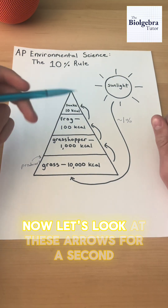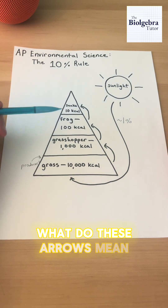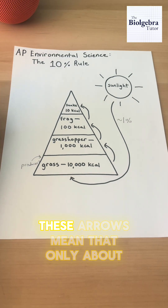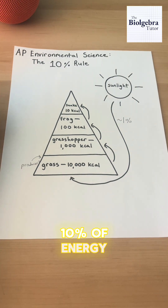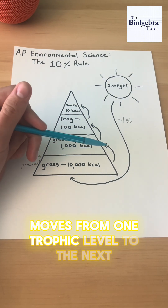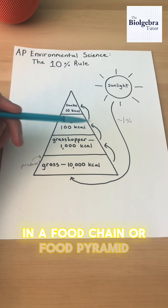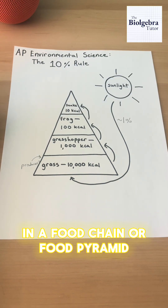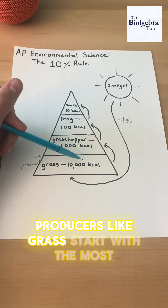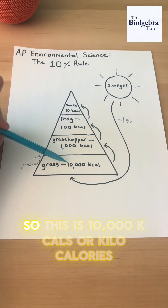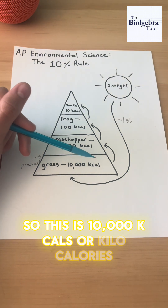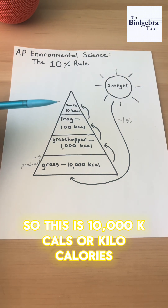Now let's look at these arrows. What do these arrows mean? These arrows mean that only about 10% of energy moves from one trophic level to the next in a food chain or food pyramid. Producers like grass start with the most — in this case, 10,000 kcals or kilocalories.